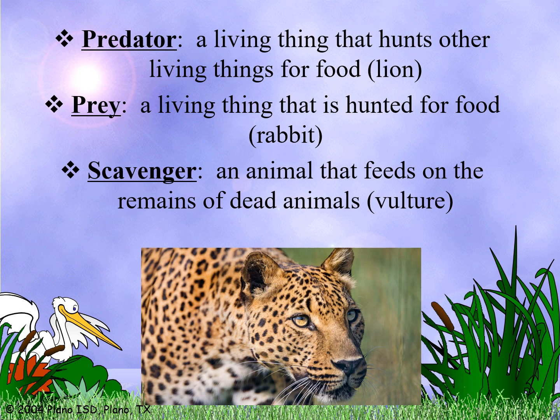We also have predators, prey, and scavengers. A predator is an organism that hunts living things for food. Prey are organisms that are hunted for food. Scavengers are animals that feed on the remains of dead animals.